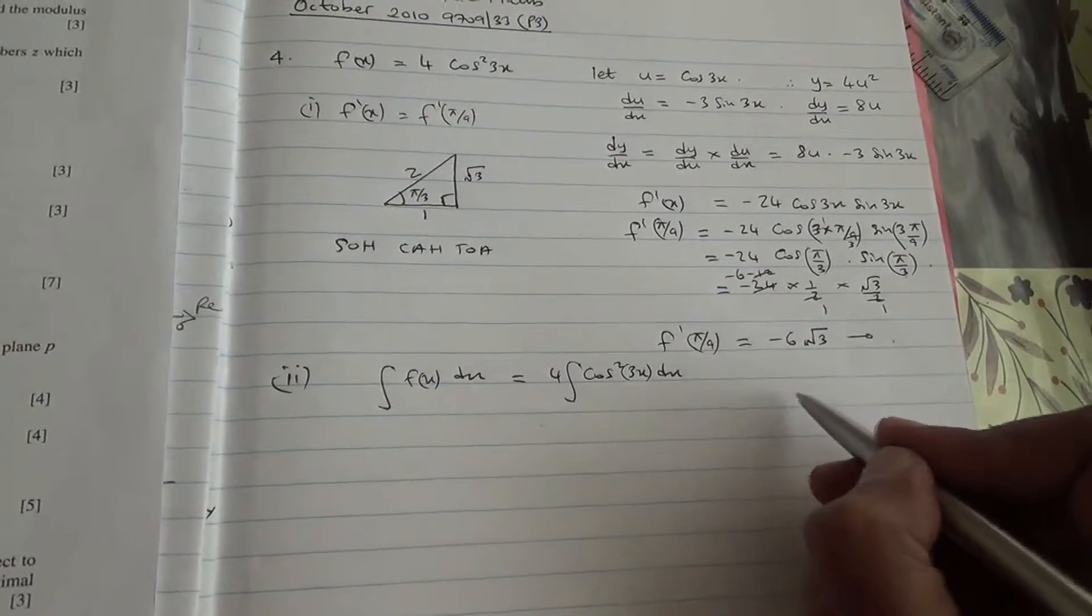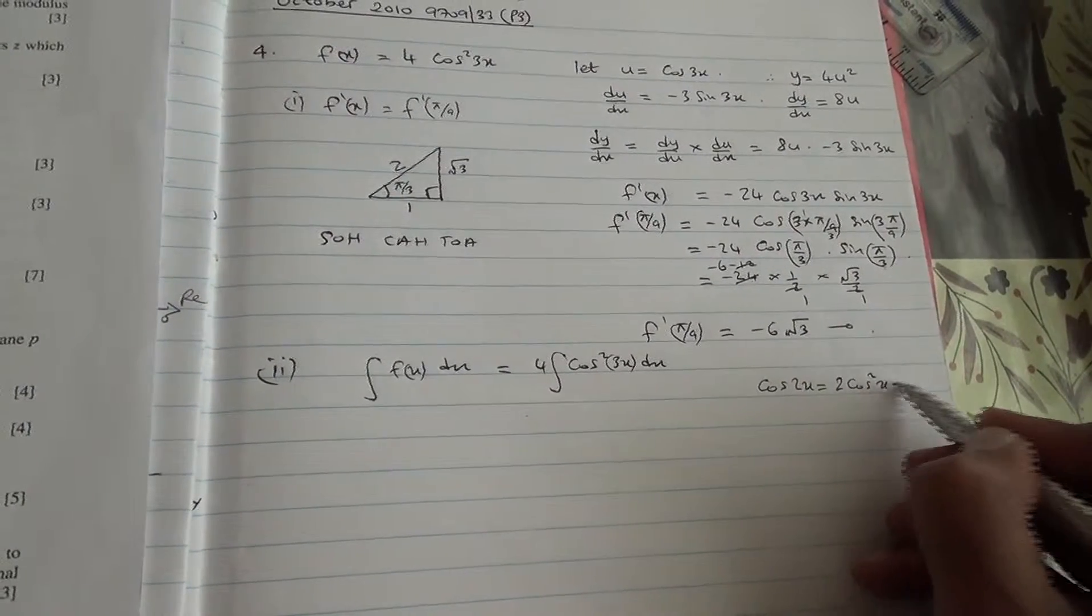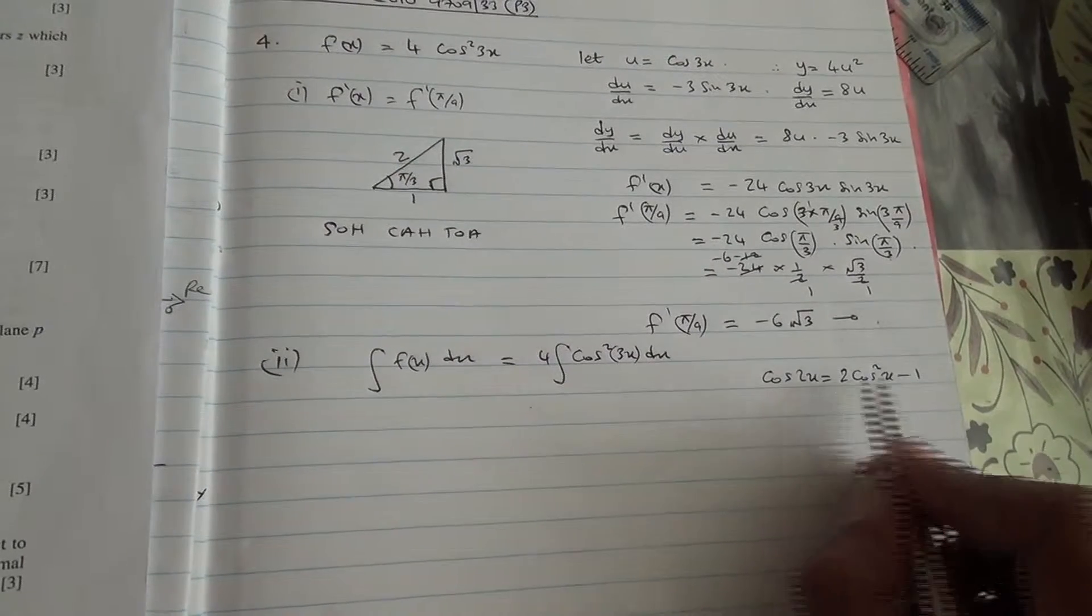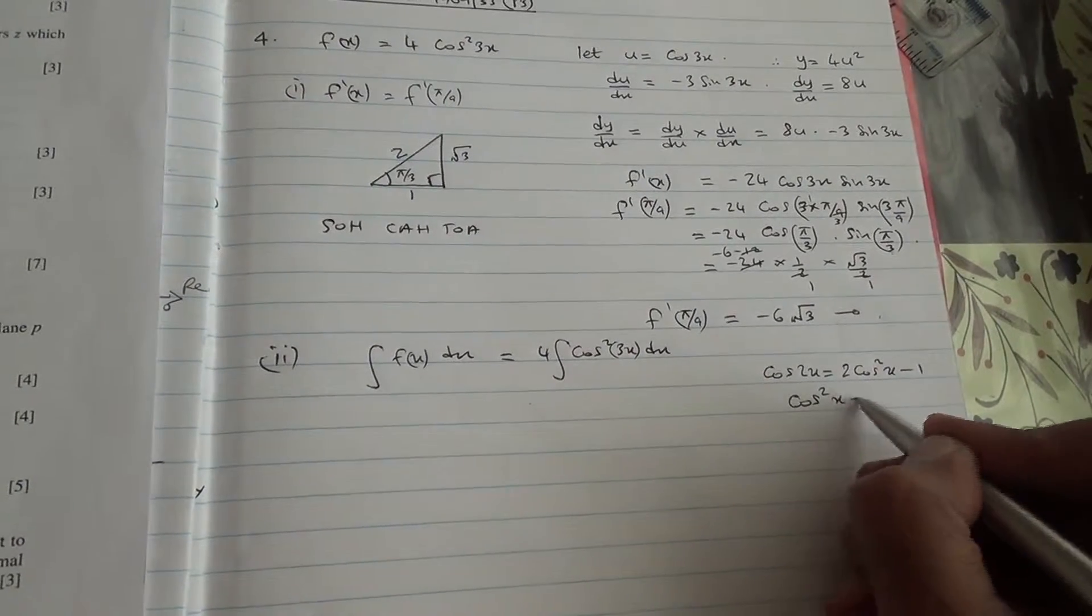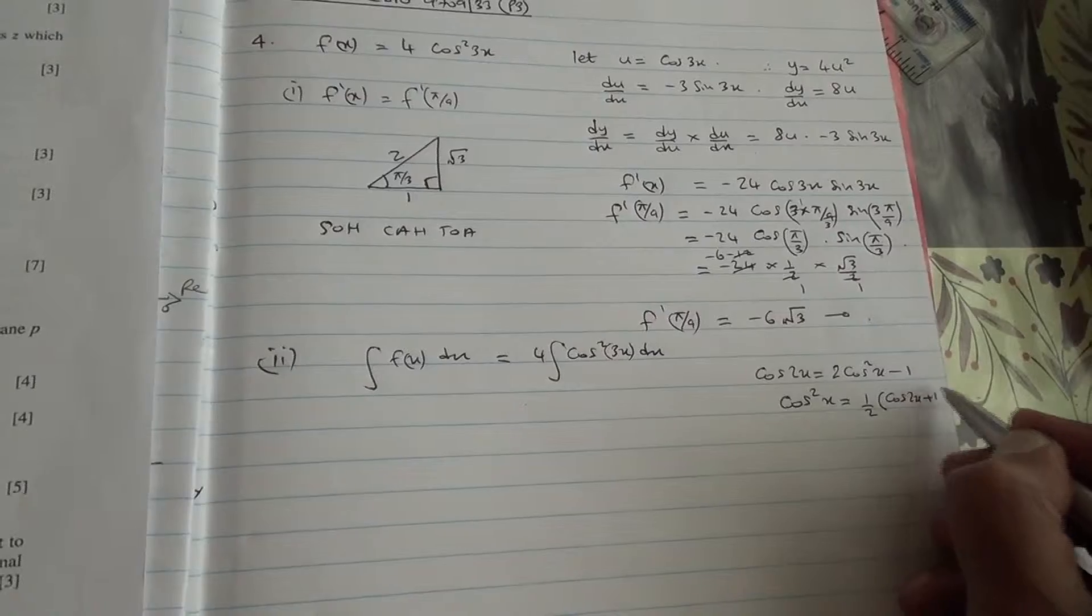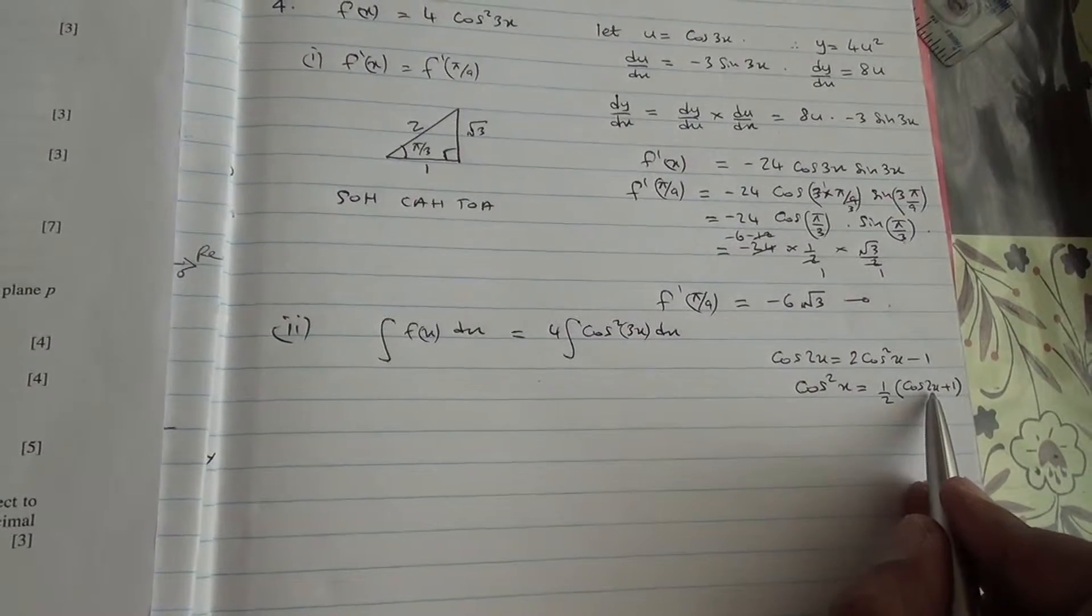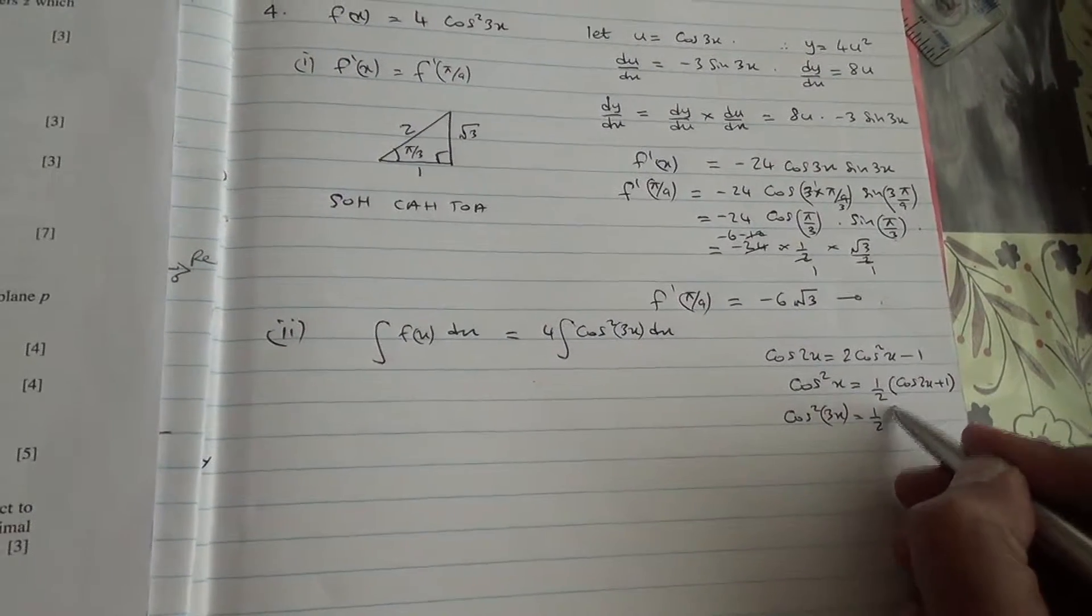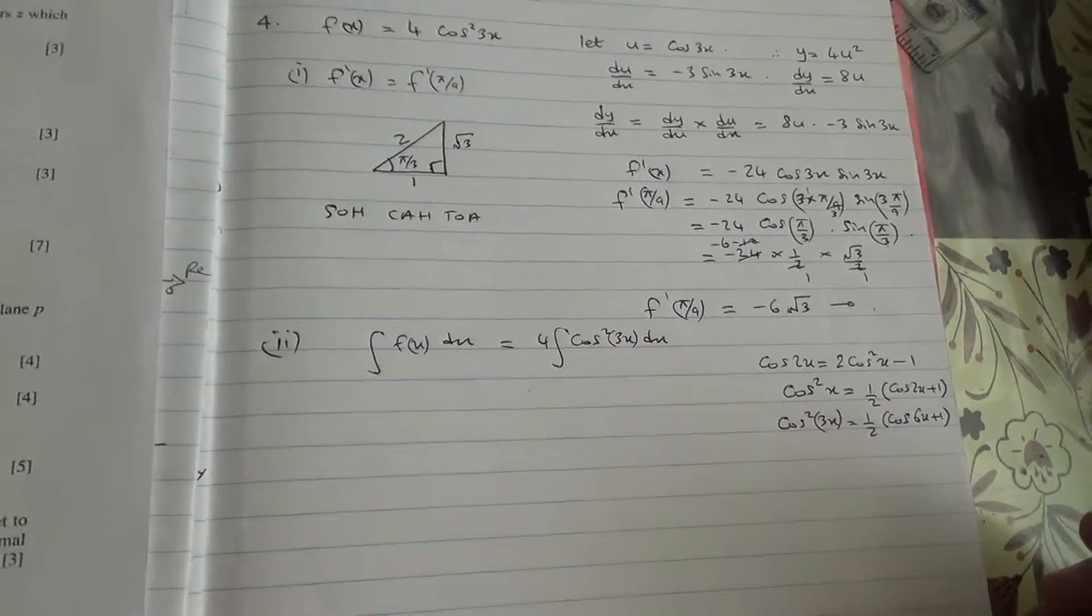So we should remember that cos 2x equals 2 cos squared x minus 1. So if I make cos squared x the subject of the formula, the 1 is going to come on this side, it's going to turn into plus instead of minus, and the 2 is going to divide the whole expression. So cos squared x equals half of cos 2x plus 1. But remember now, we have 3x here. When it is x, it's 2x inside. So cos squared 3x is going to be half times cos of 6x plus 1. So now it's going to become easy to integrate.